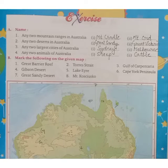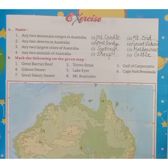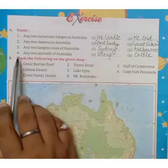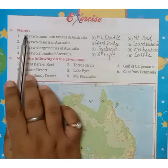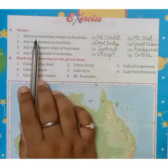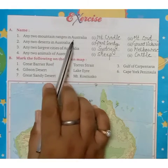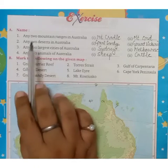Good morning students. Today we are going to do the following exercises given on page number 27 of your map activity book. The first exercise is: name the following — any two mountain ranges in Australia.